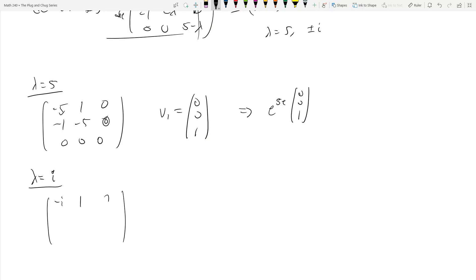So we get i, 1, 0, negative 1, negative i, 0, 0, 0, 5 minus i, okay?